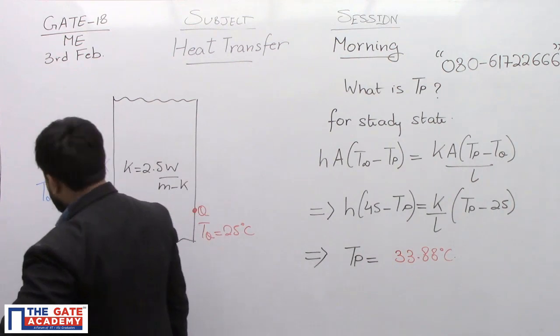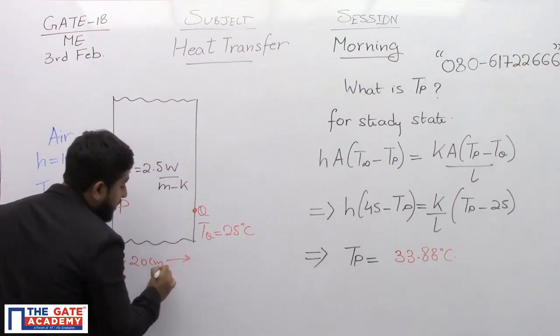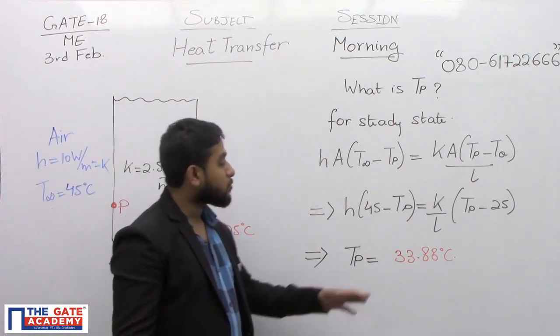One data which I have not given you is that the thickness of the wall is also given and that is 20 centimeters. So our L becomes 20 centimeter but in SI it will be 0.2.